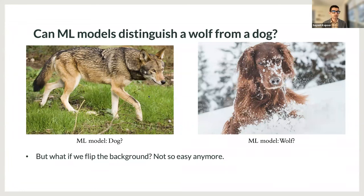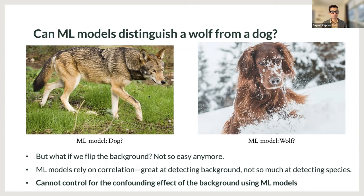This is something that machine learning models struggle with quite a bit. It's not so easy anymore for the model, trained on the original data, to distinguish between wolves and dogs. The reason is that machine learning models rely only on correlations. If you have wolves on white backgrounds and dogs on green backgrounds, the model can still predict correctly as long as you do not change the background. But once the background is flipped, it is anyone's guess how well the model does. This has been called shortcut learning — ML models rely on shortcuts to learn patterns from data. There are no good ways to control for the confounding effect of background when using ML models.